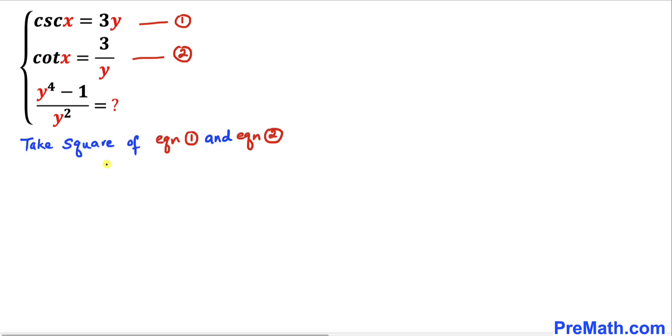Now let's take the square of equations 1 and 2. Let's focus on equation 1 first. Taking the square of this one gives us cosecant squared of x equals 3y, which becomes 9y squared.